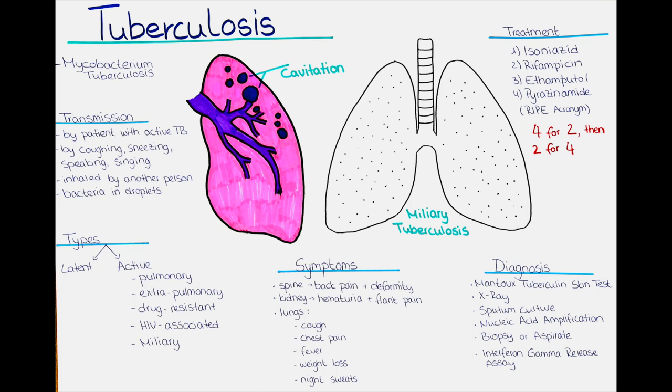Just to recap, the bacteria have to get into a person's lungs by breathing them in with the air in order to get infected. Also to mention is that not everyone who inhales the TB bacteria becomes infected. In most cases, the body's immune system is able to fight off the bacteria and prevent infection from developing.